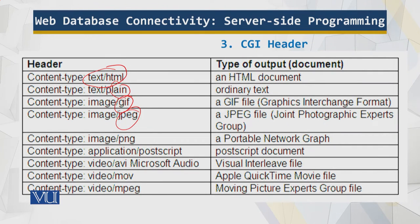The CGI header specifies the content type being returned. It could be plain HTML text, a JPEG compressed image, a movie, audio, and so on. All those things are included in a comprehensive header, which contains all the information required for the CGI script to run.